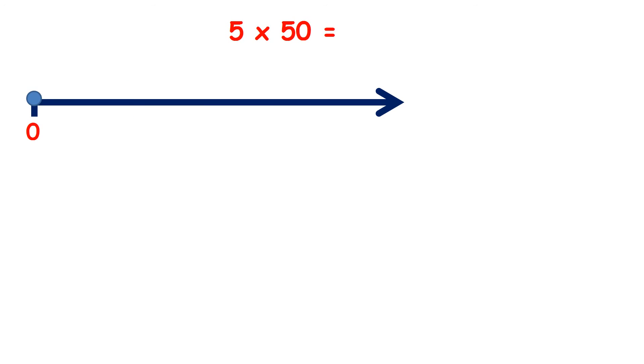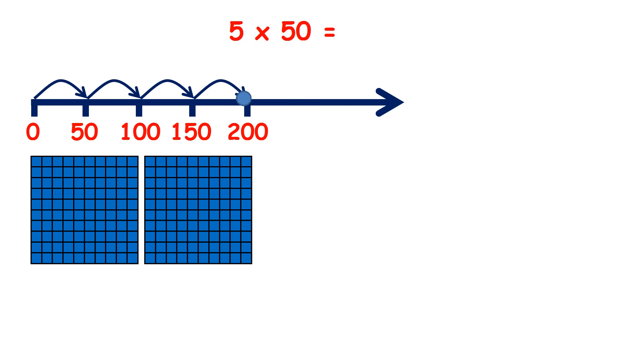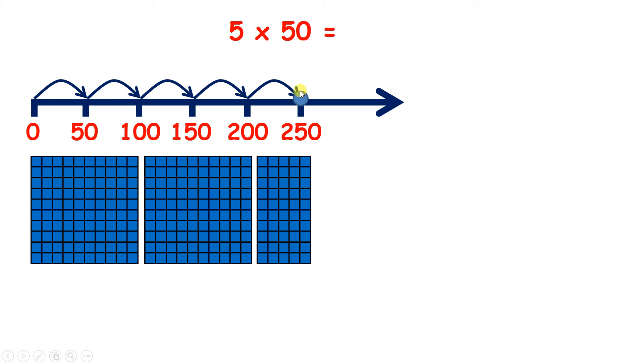Now, pause the video if you need to and answer 5 times 50. So, let's count in steps of 50 five times. 50, 100, 150, 200, 250. So, we've made 5 jumps on our number line. So, 5 times 50 equals 250.